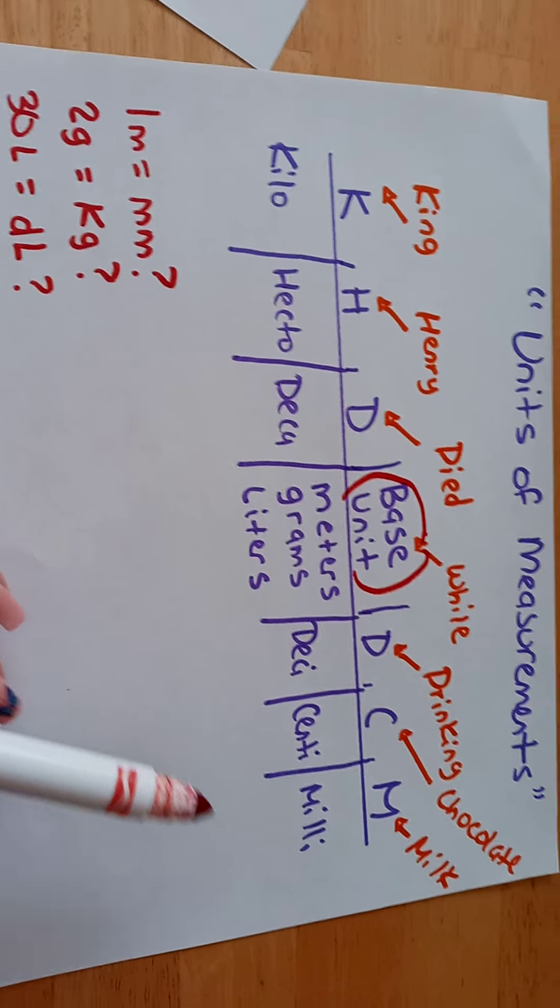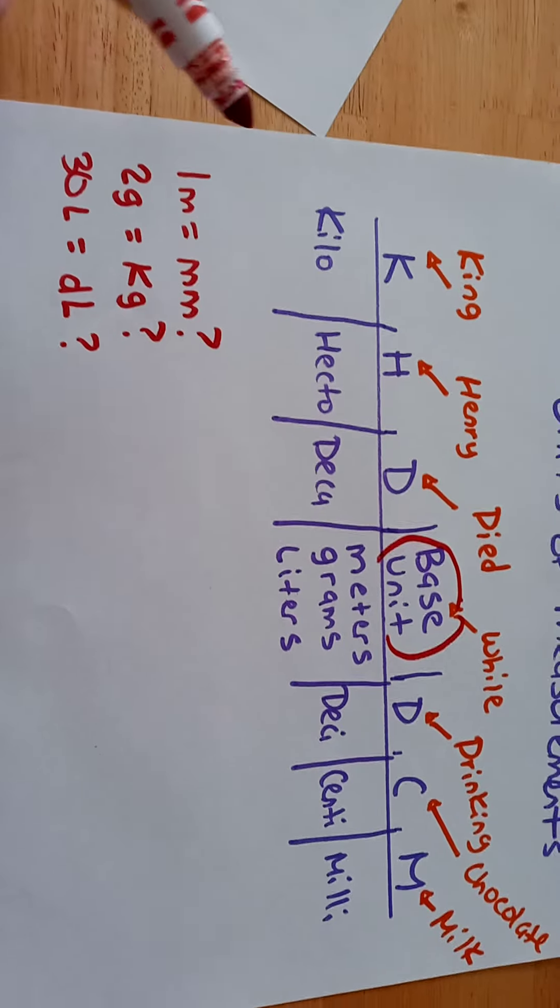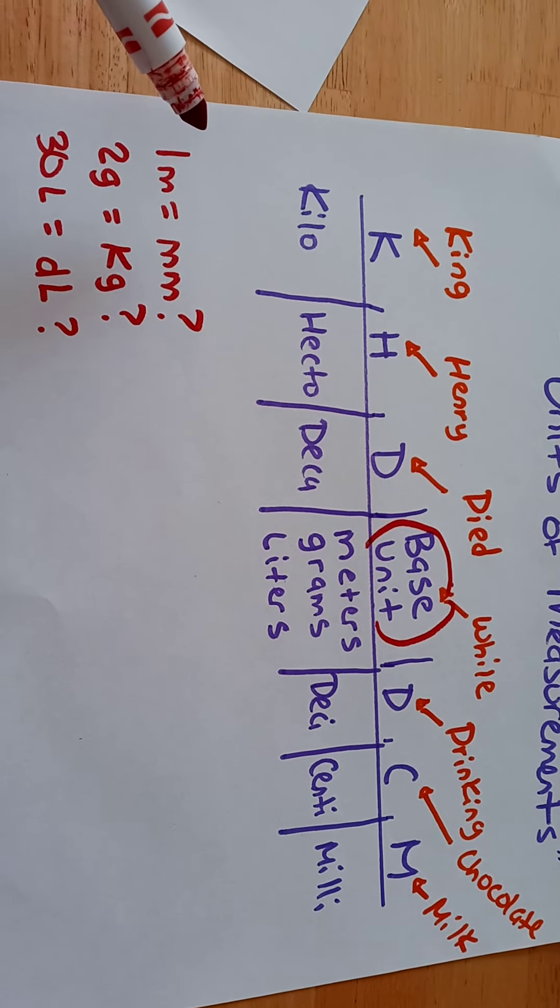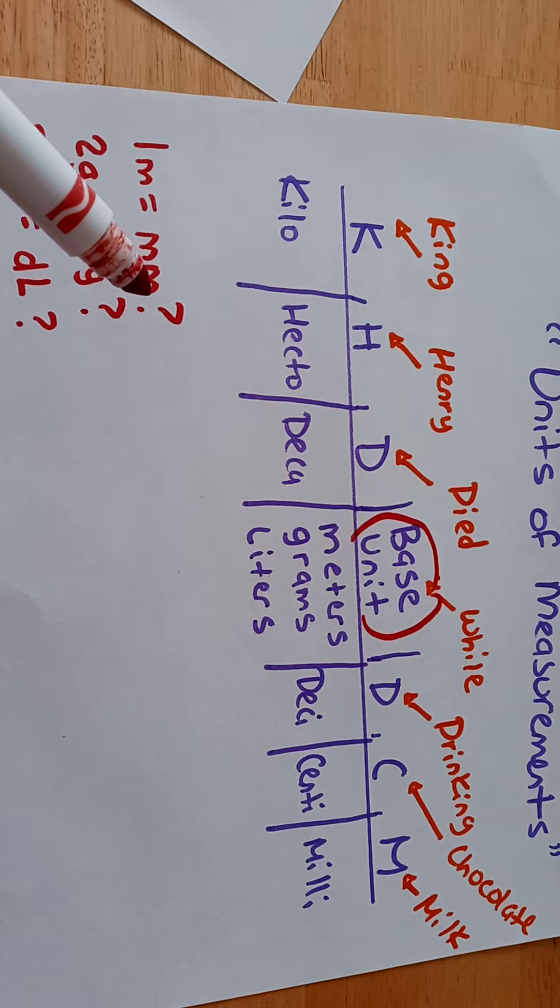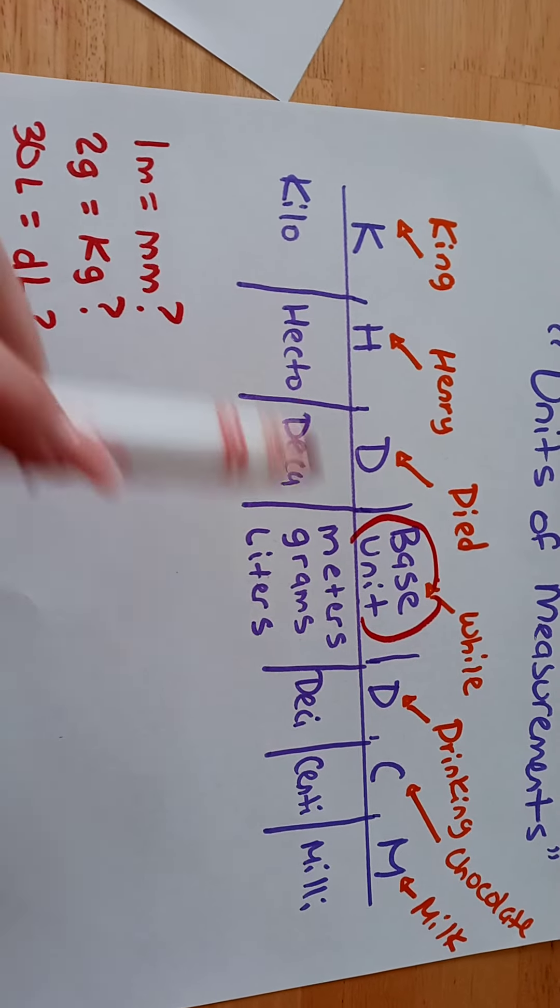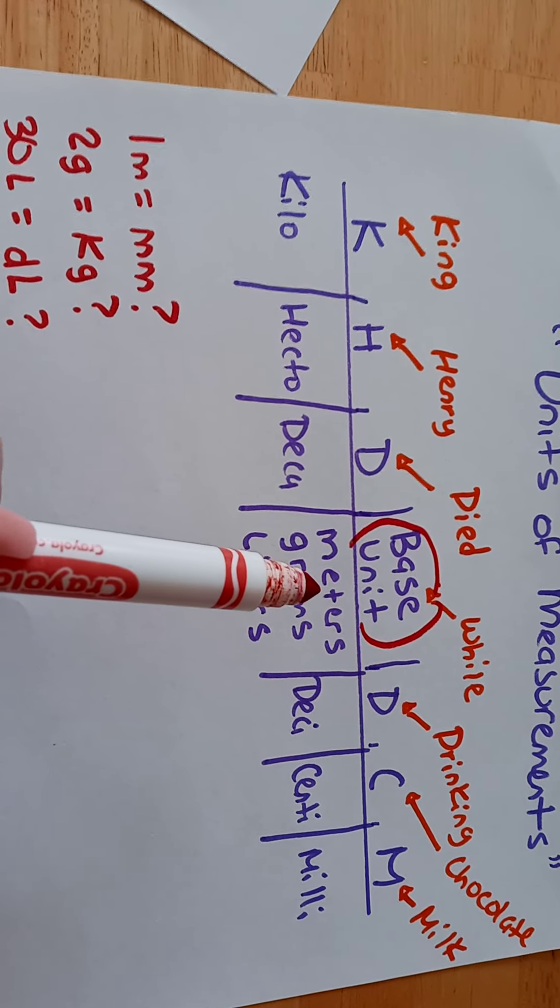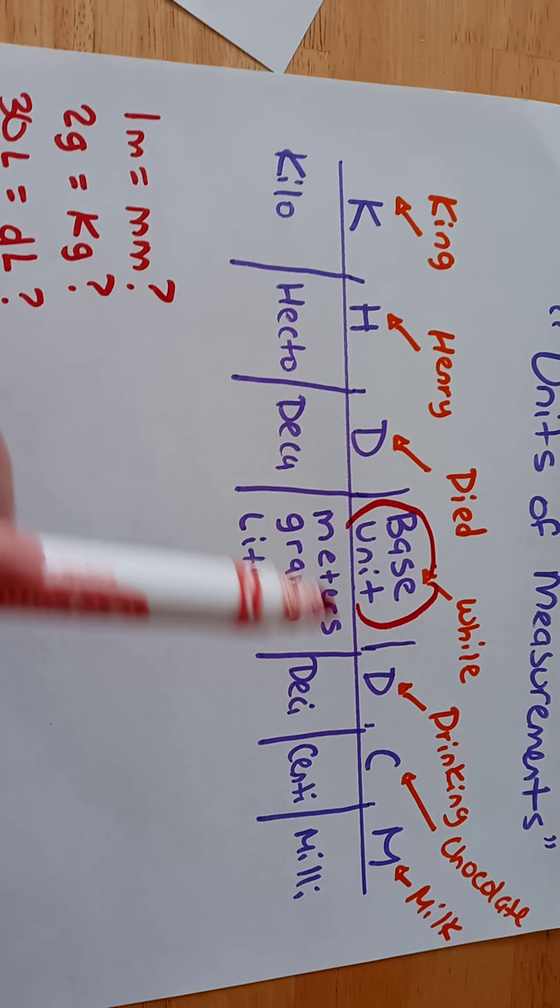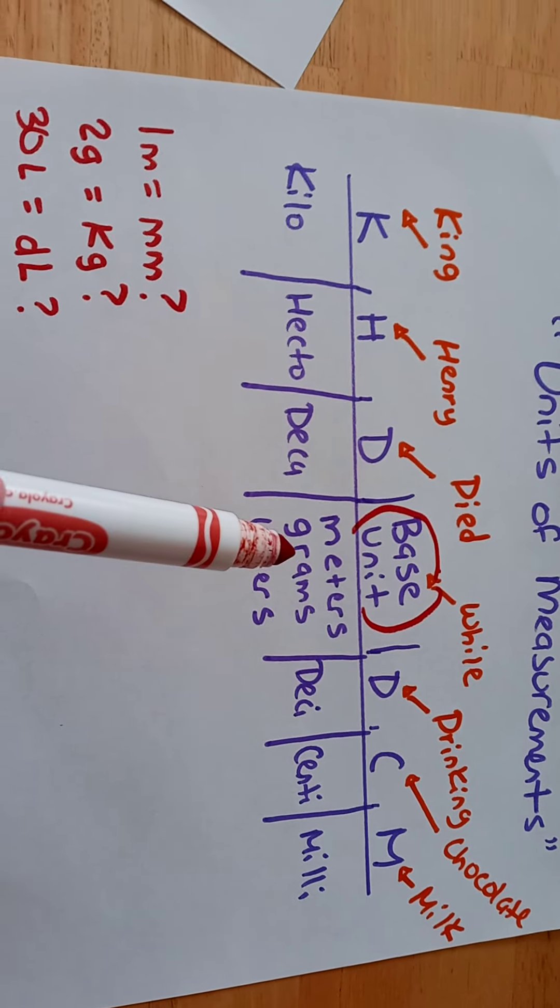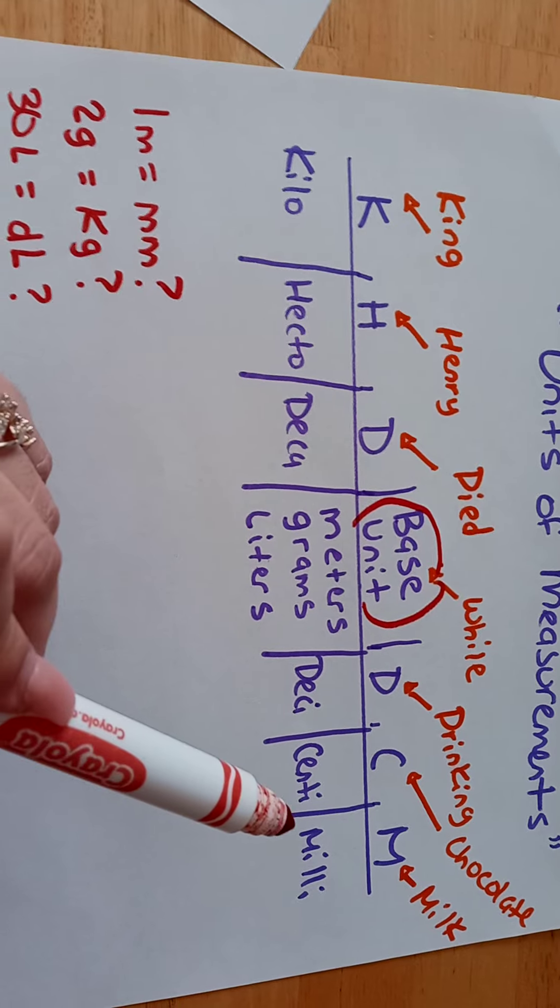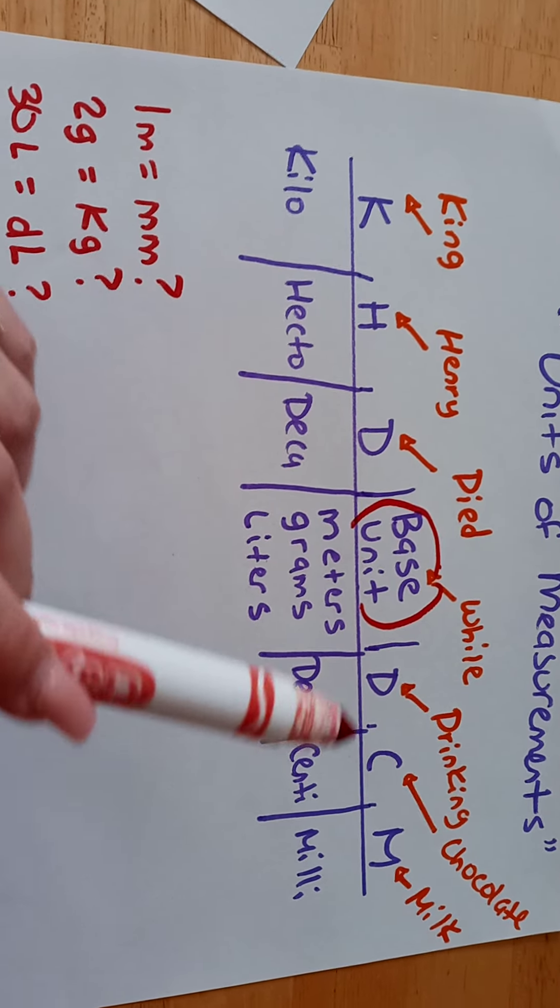Now let's convert some measurements. What is 1 meter to millimeters? Well, 1 meter, we go to the base unit, is right here, 1 meter. And we're trying to convert it into millimeters. So how many spaces to the right will we move the decimal place?